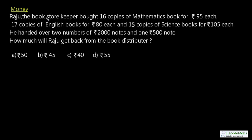The question reads: Raju the bookstore keeper bought 16 copies of mathematics books for ₹95 each, 17 copies of English books for ₹80 each, and 15 copies of science books for ₹105 each. Let us convert these statements to understandable expressions.